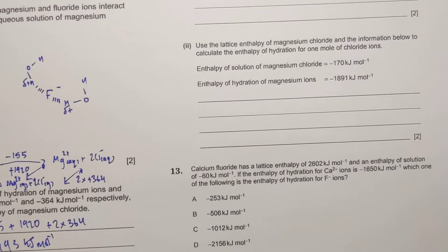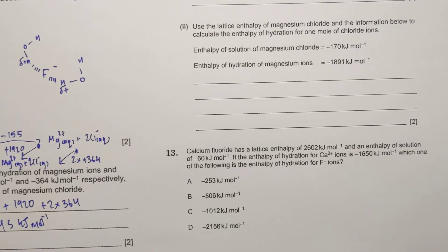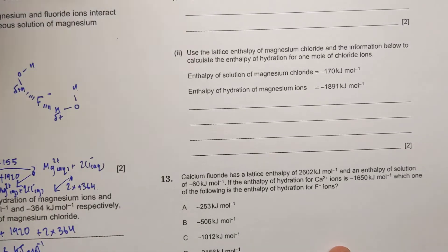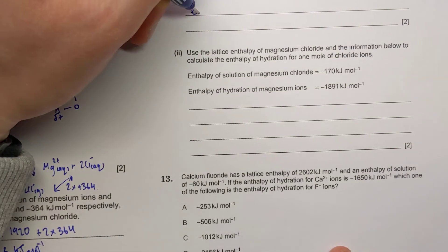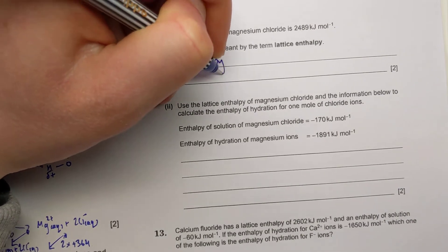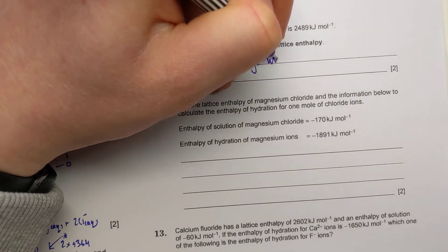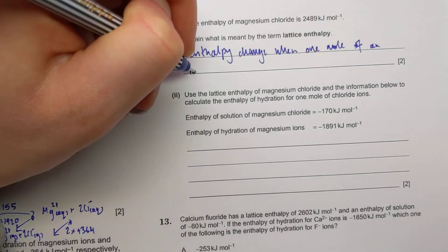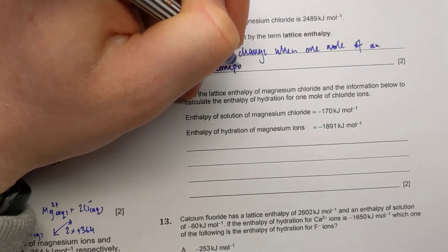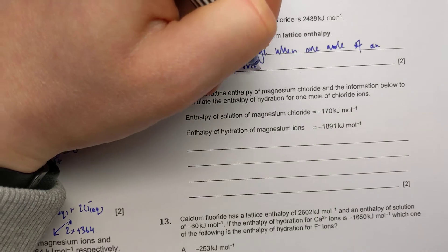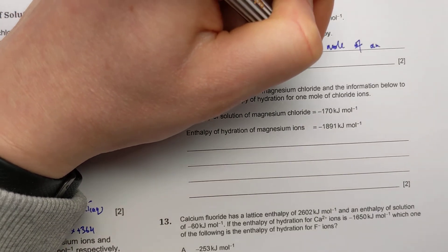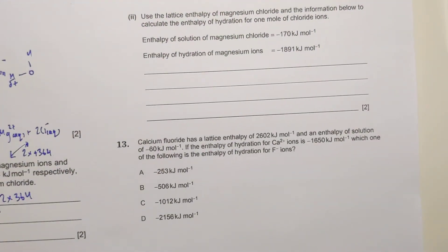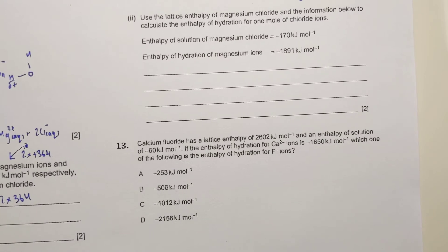Question 12 is again on magnesium chloride. Part one asks you to explain what is meant by the term lattice enthalpy — that's straight from your notes. The definition is: the enthalpy change when one mole of an ionic compound is converted to gaseous ions.